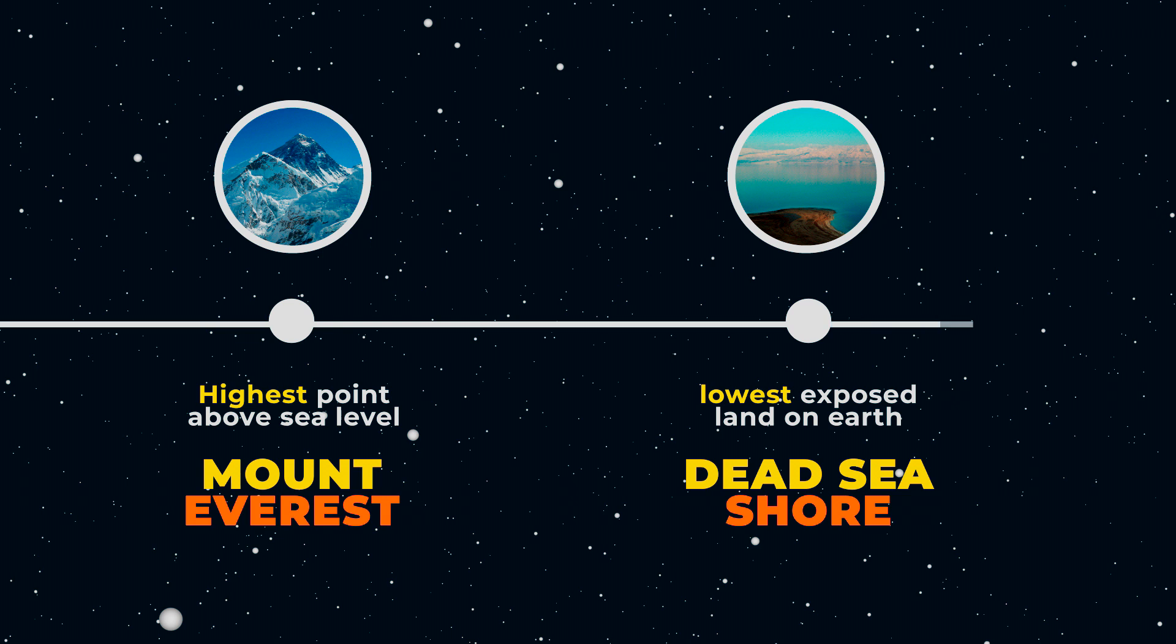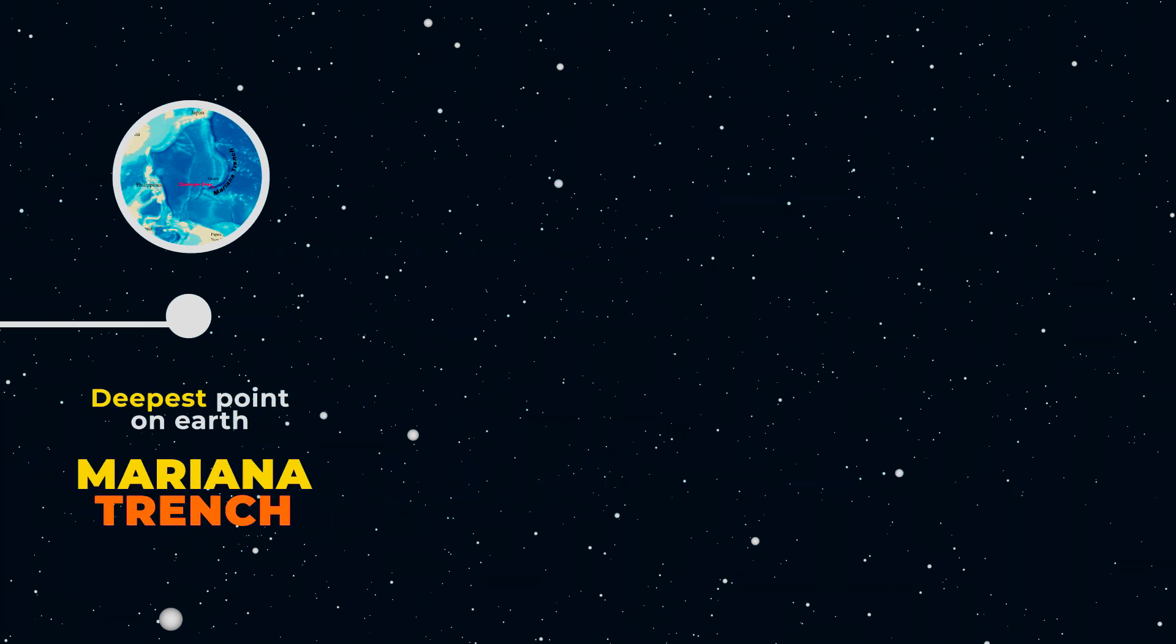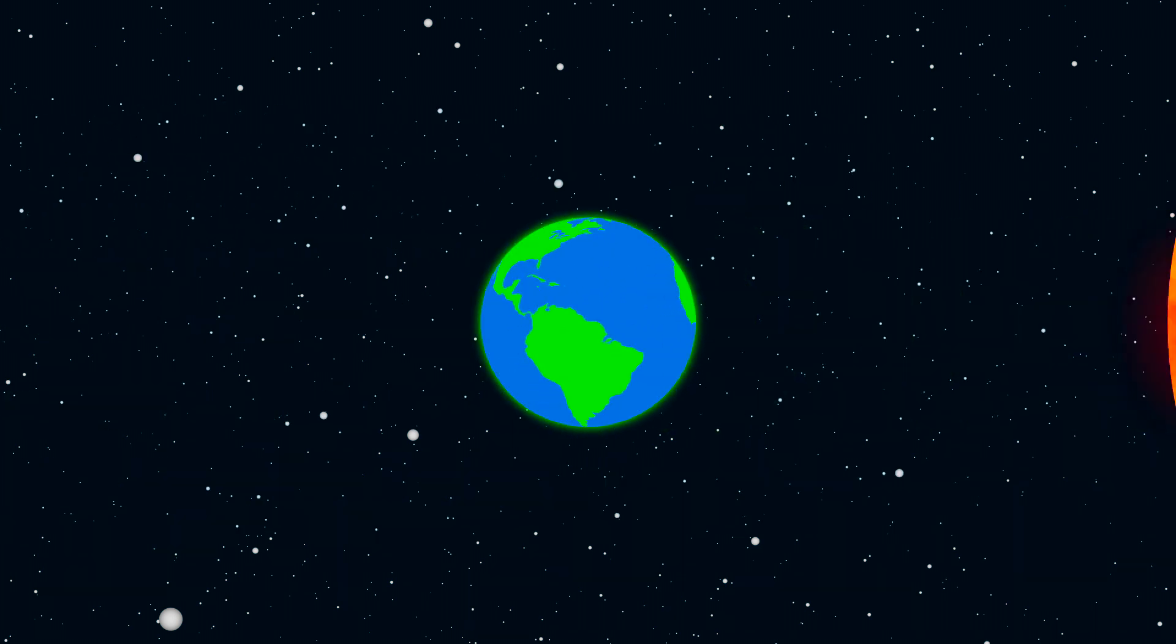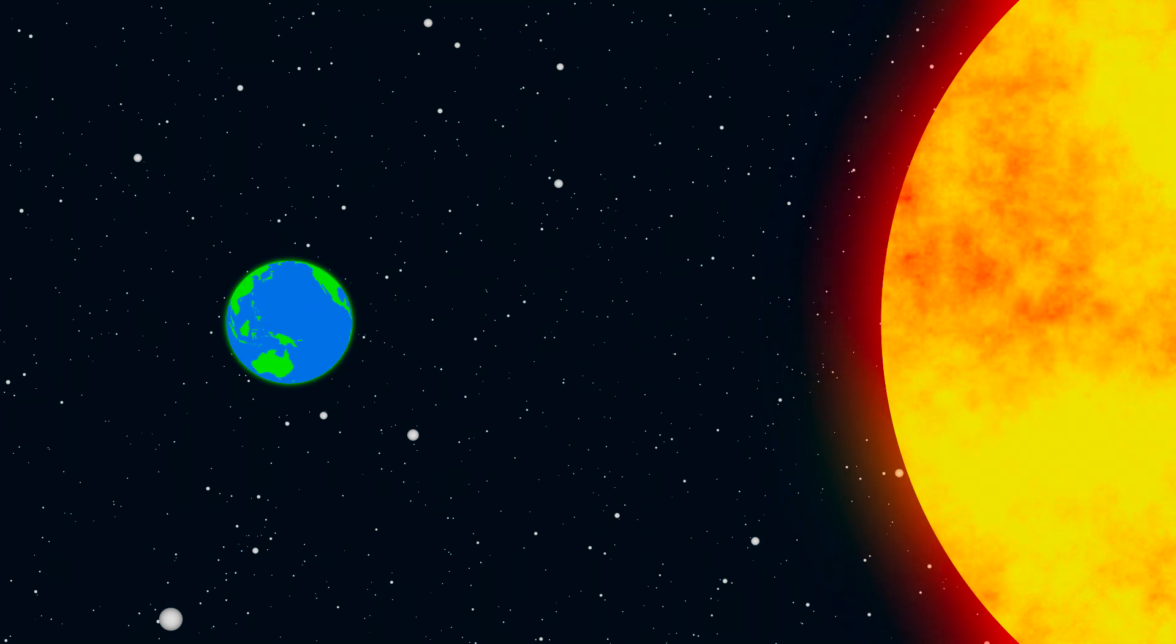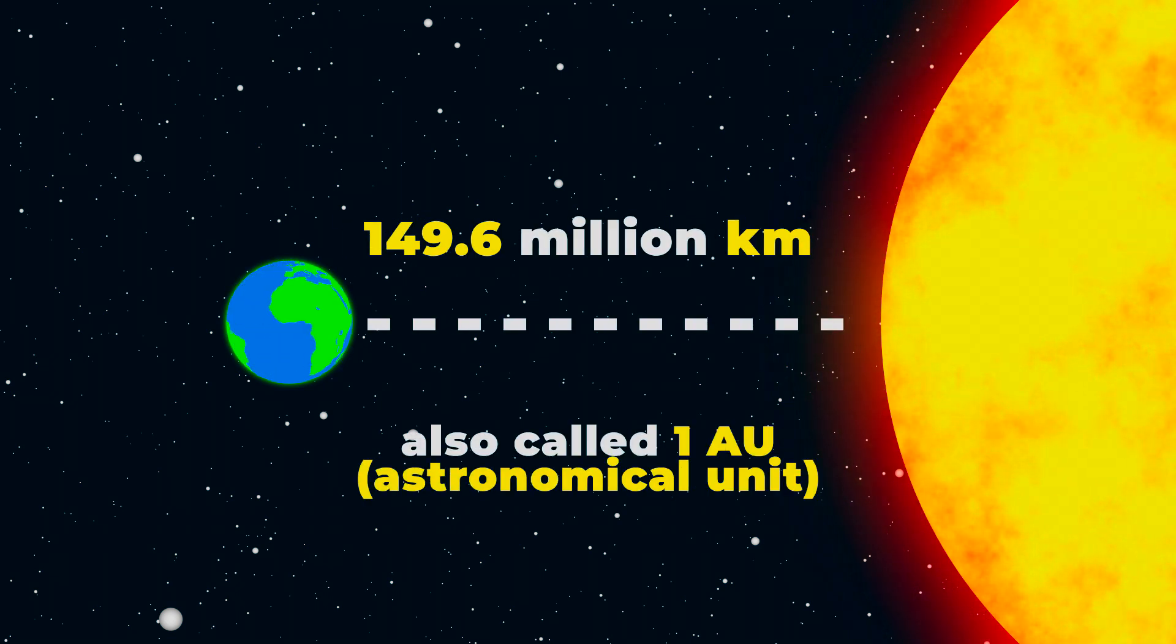The deepest point on Earth is the Mariana Trench in the Pacific Ocean, measuring 11,033 meters below sea level. The distance between Earth and the Sun is about 150 million kilometers, also called one astronomical unit.